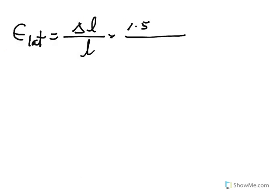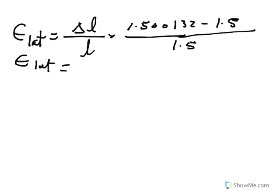If we take 1.500132 minus 1.5, that's the change, divided by initial length which is 1.5, that would be a lateral strain, which would be then 0.000088. This is the lateral strain.